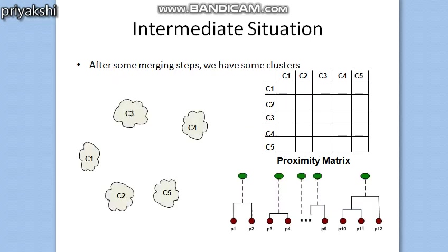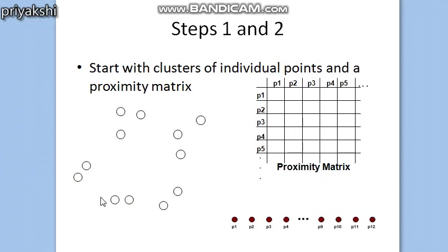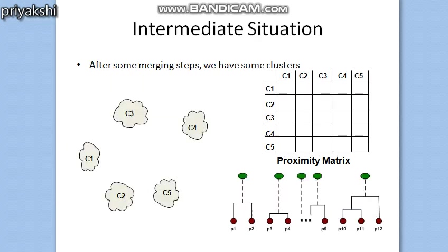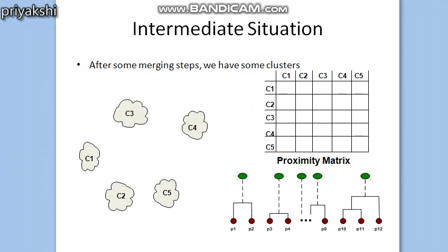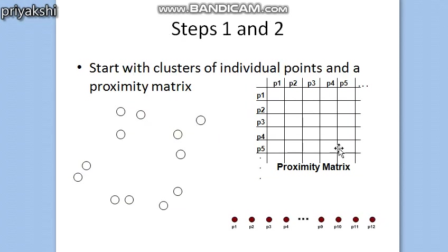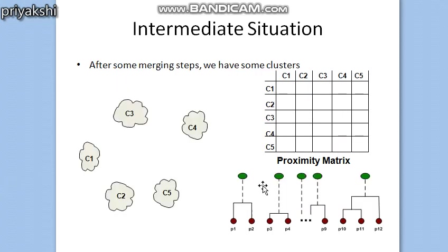In the next step we are going to merge the two closest clusters — the pairs that are very close to each other. After merging, if we started with 12 clusters, we now have perhaps 6 or 5 clusters, so the proximity matrix that was earlier 12×12 is now a 5×5 matrix.